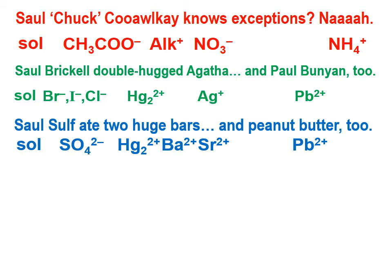The third mnemonic tells us that the sulfate ion is typically going to appear in soluble compounds, unless the cation in those compounds is the mercury(I) ion, the barium ion, the strontium ion, or the lead(II) ion. Notice that barium and strontium are combined into the word 'bars' in the mnemonic, and we have to be a little dyslexic with the R and S in strontium — nonetheless, the mnemonic is still useful.